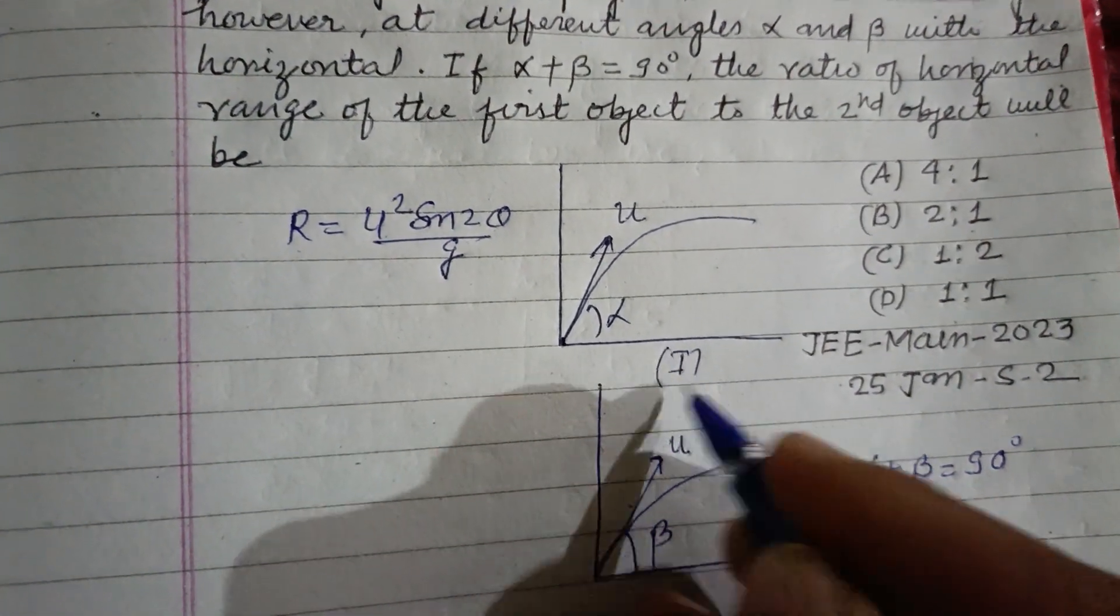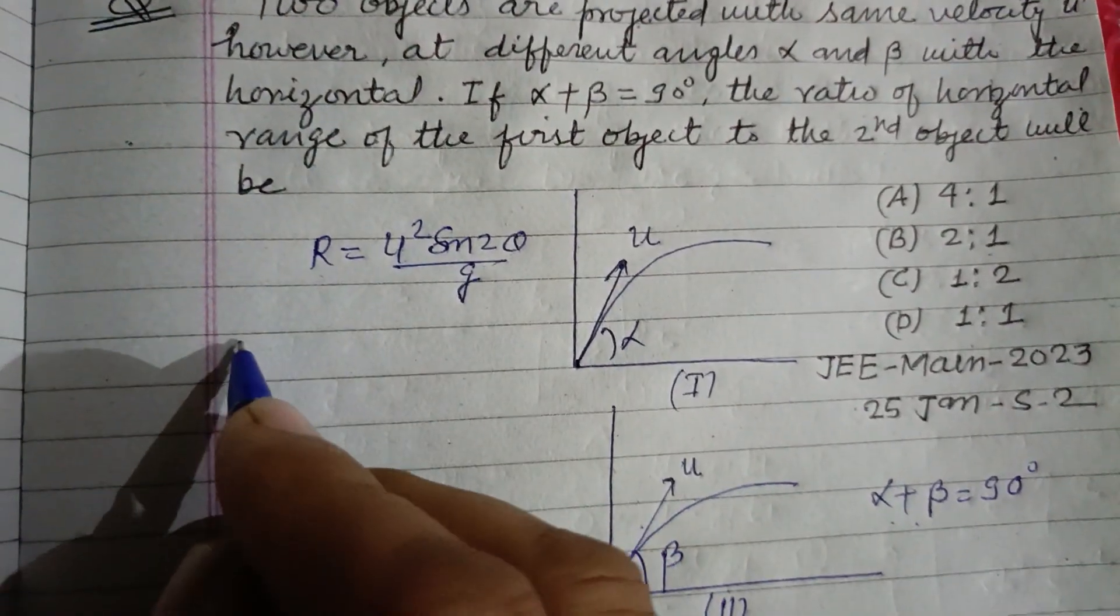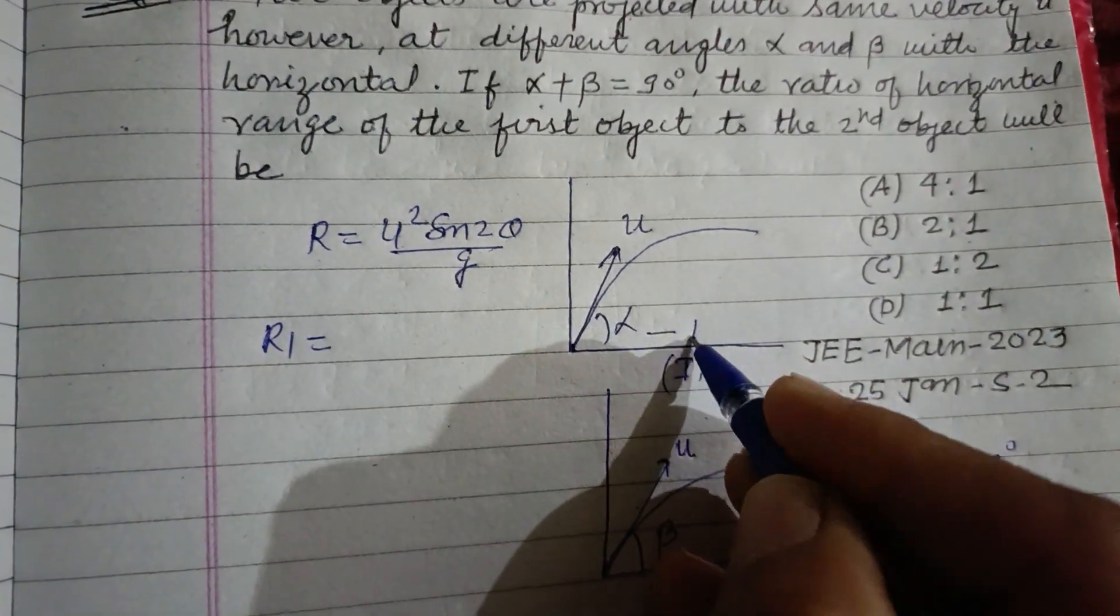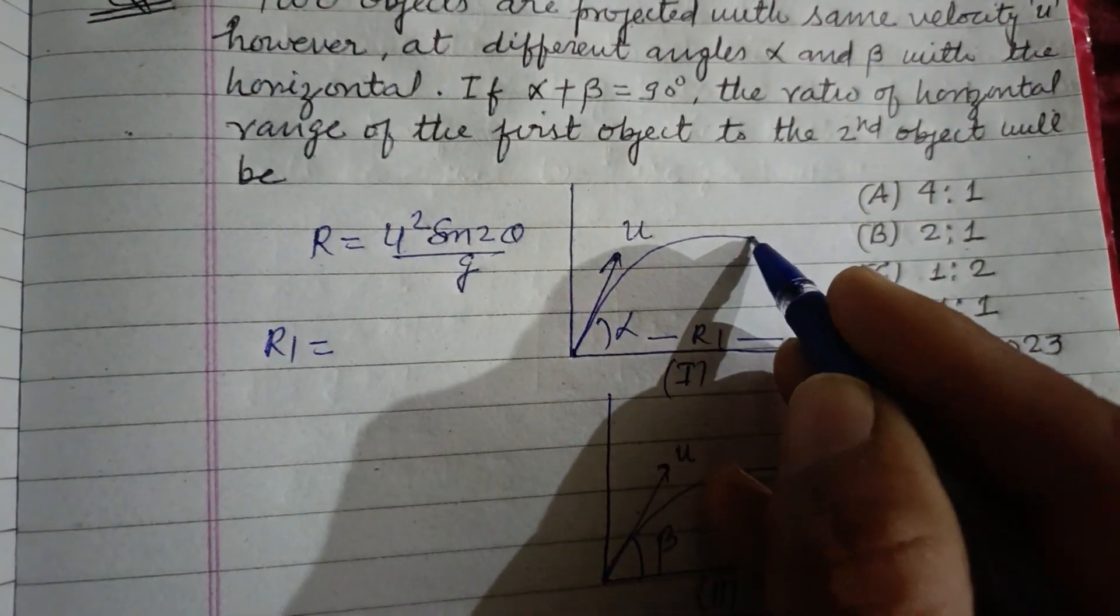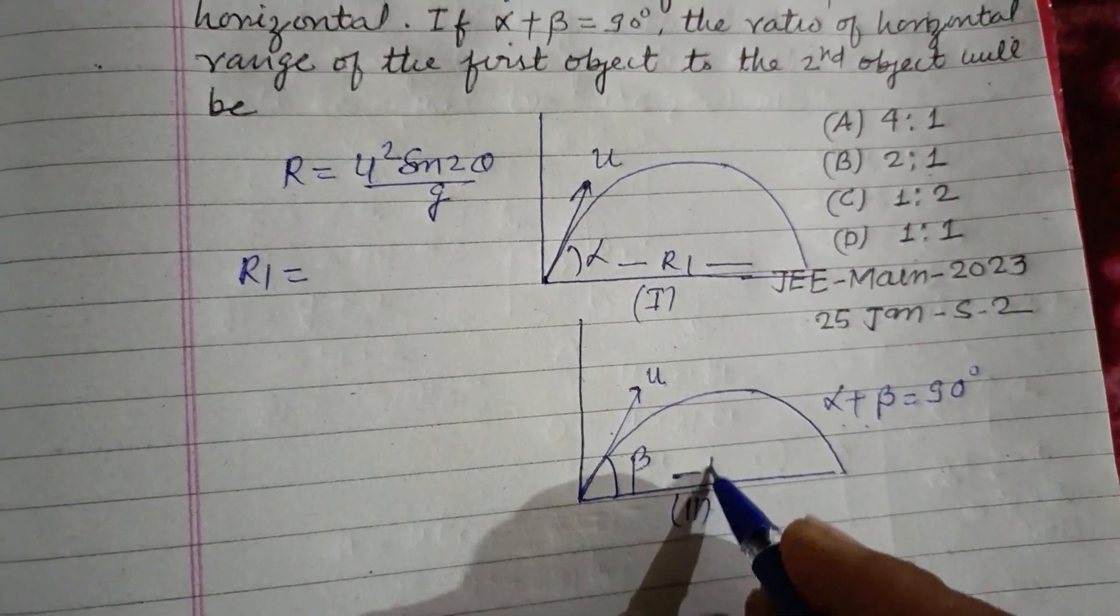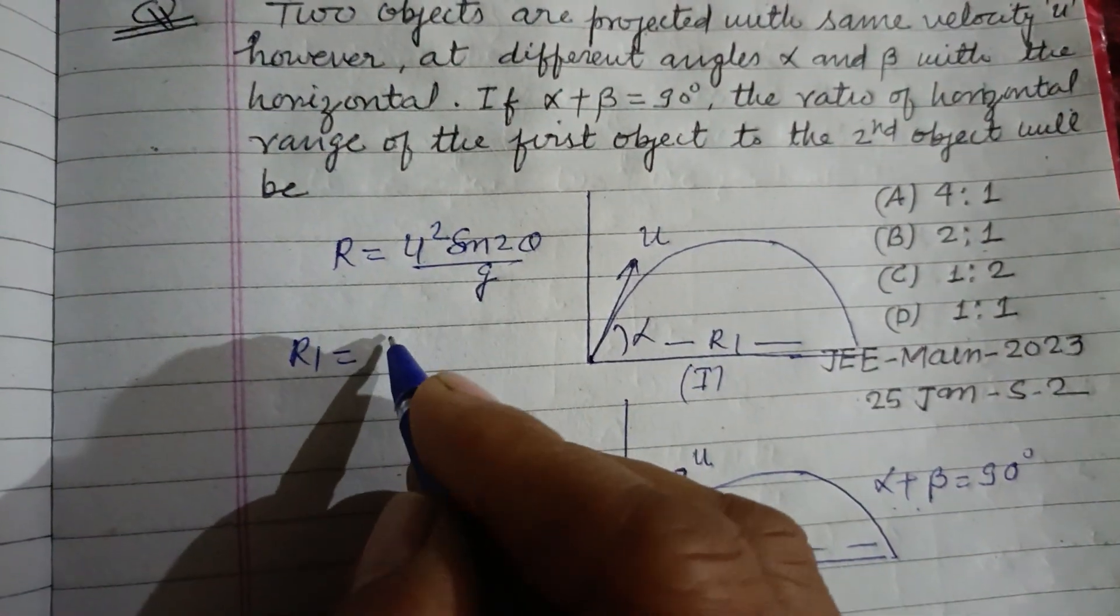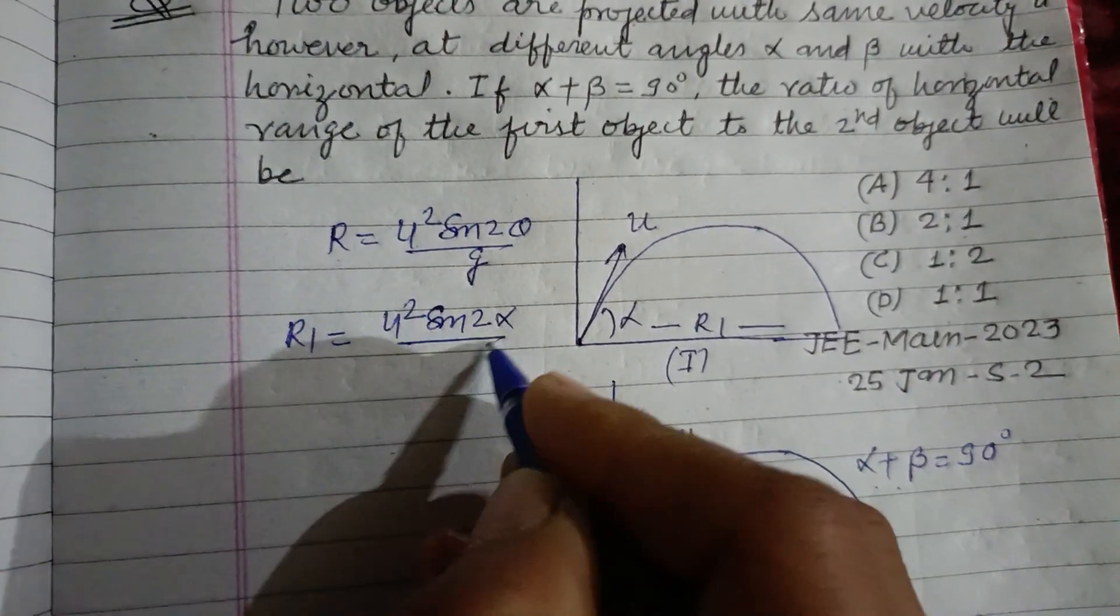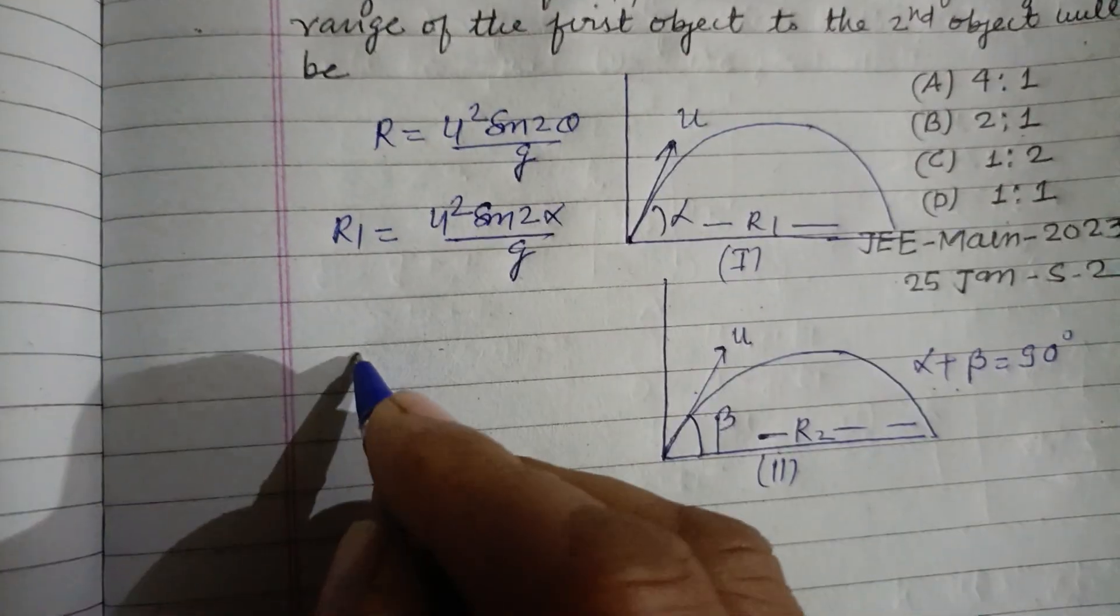In this is first case and this is second case. So R1, in this case let horizontal range is R1, and in this case the horizontal range is R2. So R1 equals u squared sin 2 alpha upon g, and R2